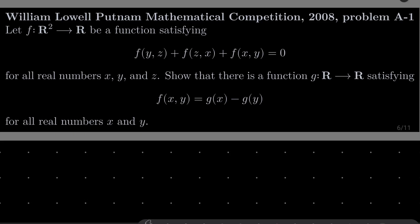Let f go from R squared into R be a function satisfying this functional equation f of yz plus f of zx plus f of xy equals 0 for all real numbers x, y and z. We wish to demonstrate that there is a function g from the set of real numbers into itself satisfying f of xy equals g of x minus g of y for all real numbers x and y.